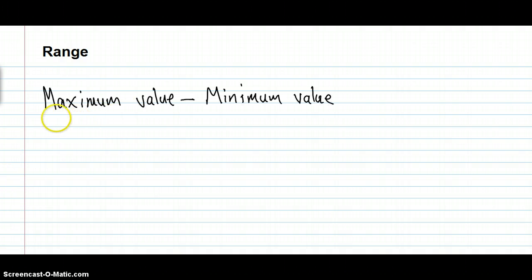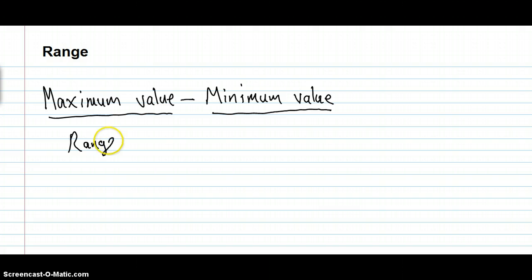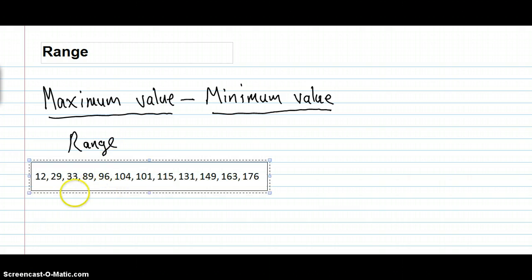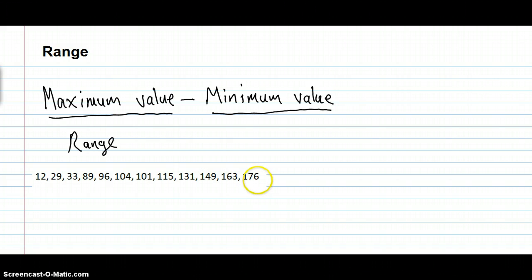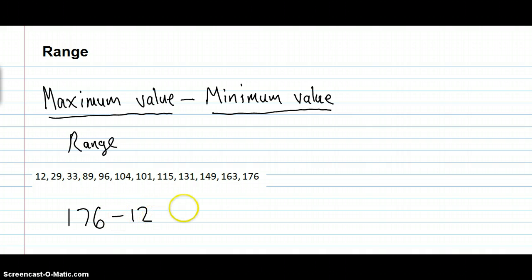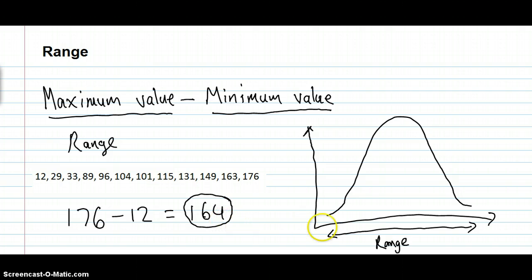Let's start with the range. The range is pretty simple — you just take the maximum value in the data and subtract the minimum value. Here's an example: we have numbers from 12 all the way up to 176. The maximum is 176, the minimum is 12, so 176 minus 12 equals 164. This number tells us the gap between the minimum and maximum value for the dataset.